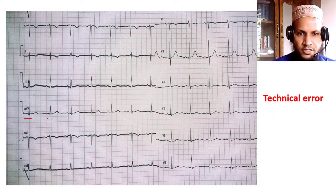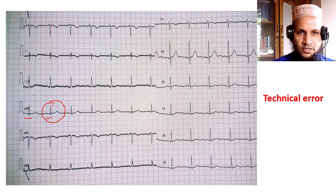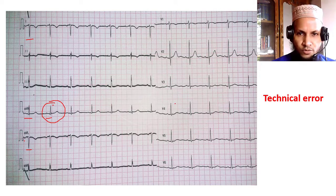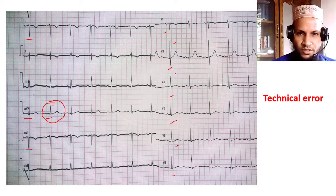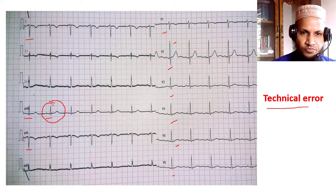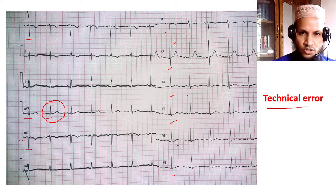In this second ECG, the P and R waves are positive in AVR, which may be due to technical error or dextrocardia. Looking at lead I and AVL, the P is inverted and the R wave is predominantly negative. However, in the precordial leads there is no reverse progression — it is almost normal progression, though there is some abnormality: the R wave in V2 is abnormally tall relative to V1 and V3. This is due to technical error. In technical error, we find positive waves in AVR and negative waves in leads I and AVL, but no reverse R wave progression in precordial leads.